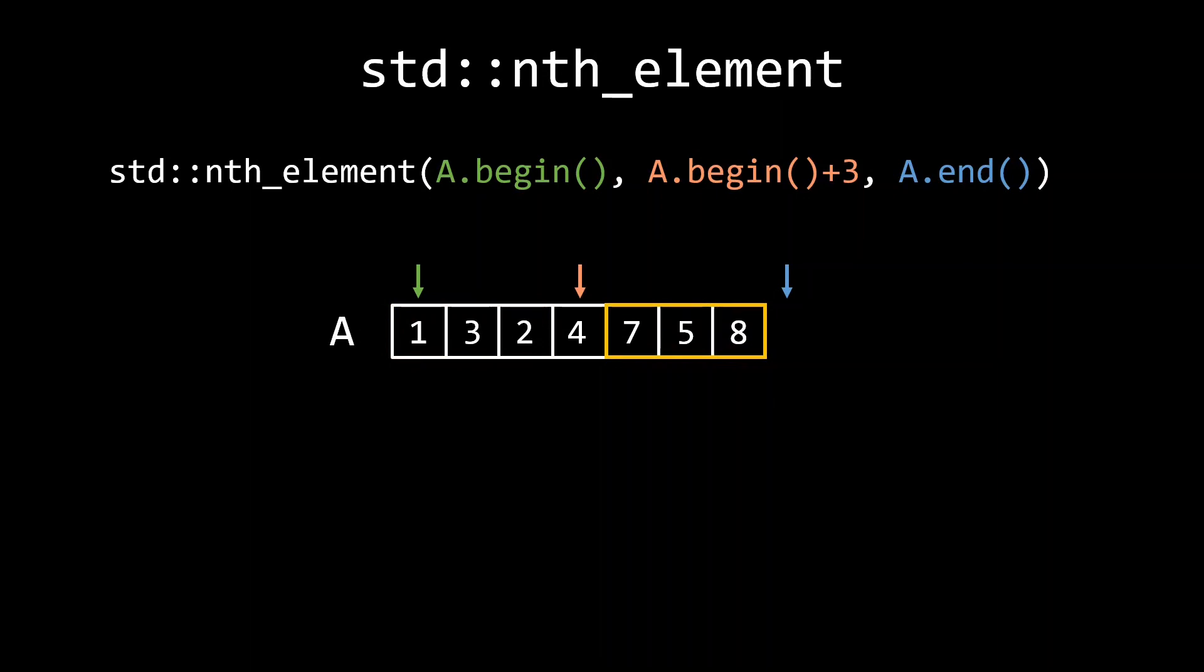So, when would you use nth element? It is of course great for finding the nth element, and as such can be used to quickly determine the statistical median, as it only uses a linear number of comparisons. Aside from that, the fact that this nth element acts as a pivot, along which the smaller and larger elements are partitioned, makes it a great building block for certain algorithms.